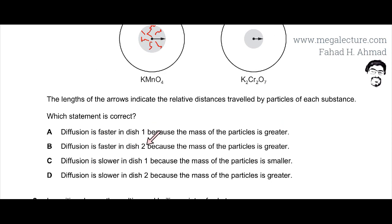Diffusion is faster in dish 2. That's automatically incorrect because KMnO4 is traveling a larger distance in the same amount of time. So it's faster in dish 1. Diffusion is slower in dish 1. That's also incorrect.